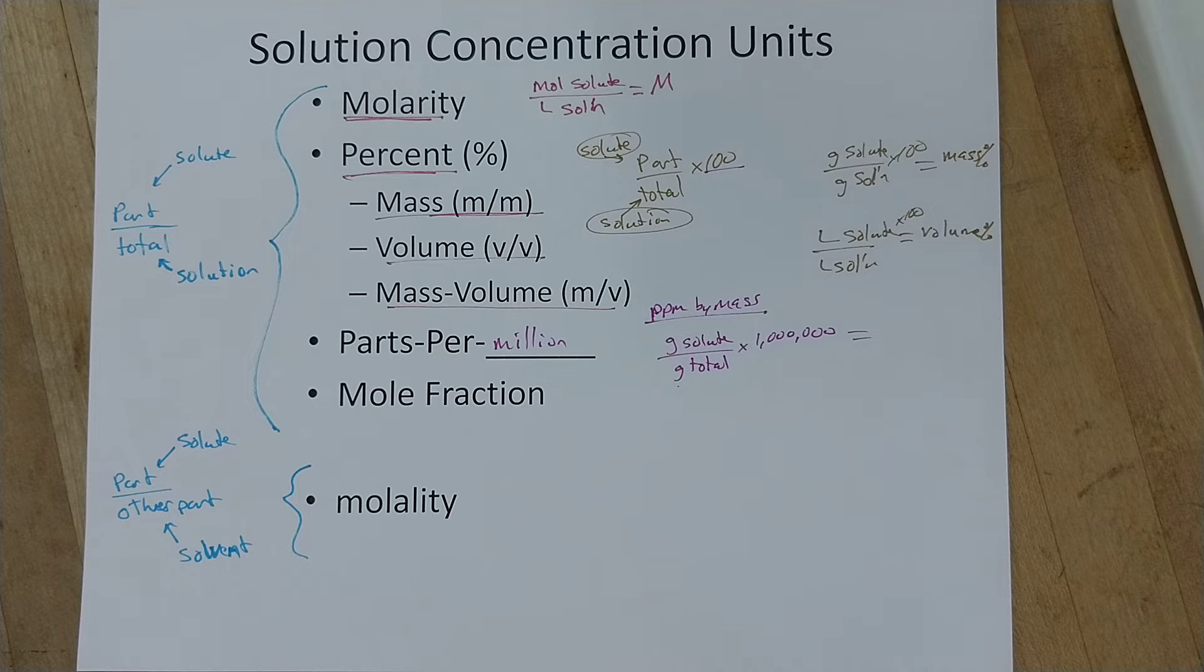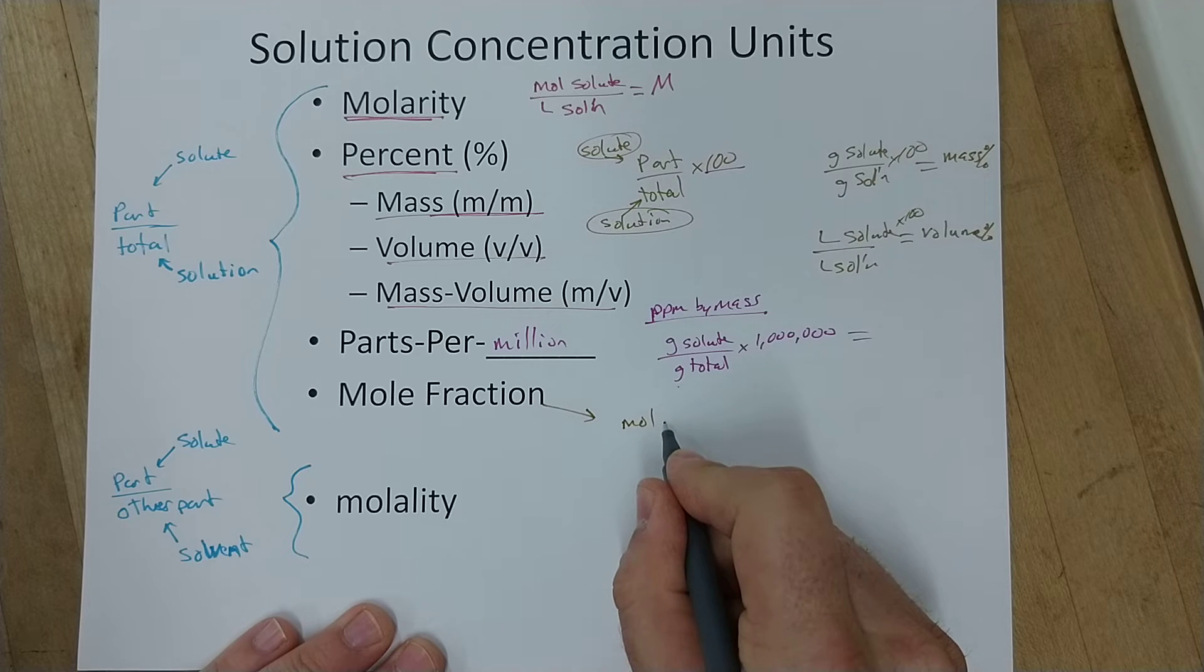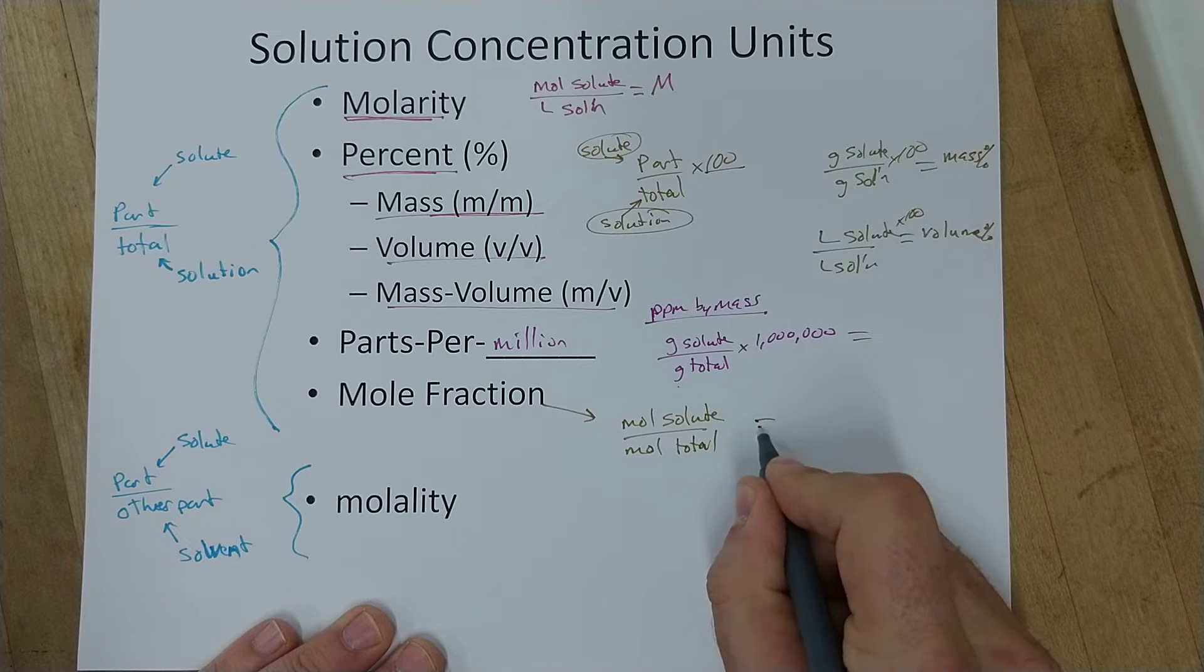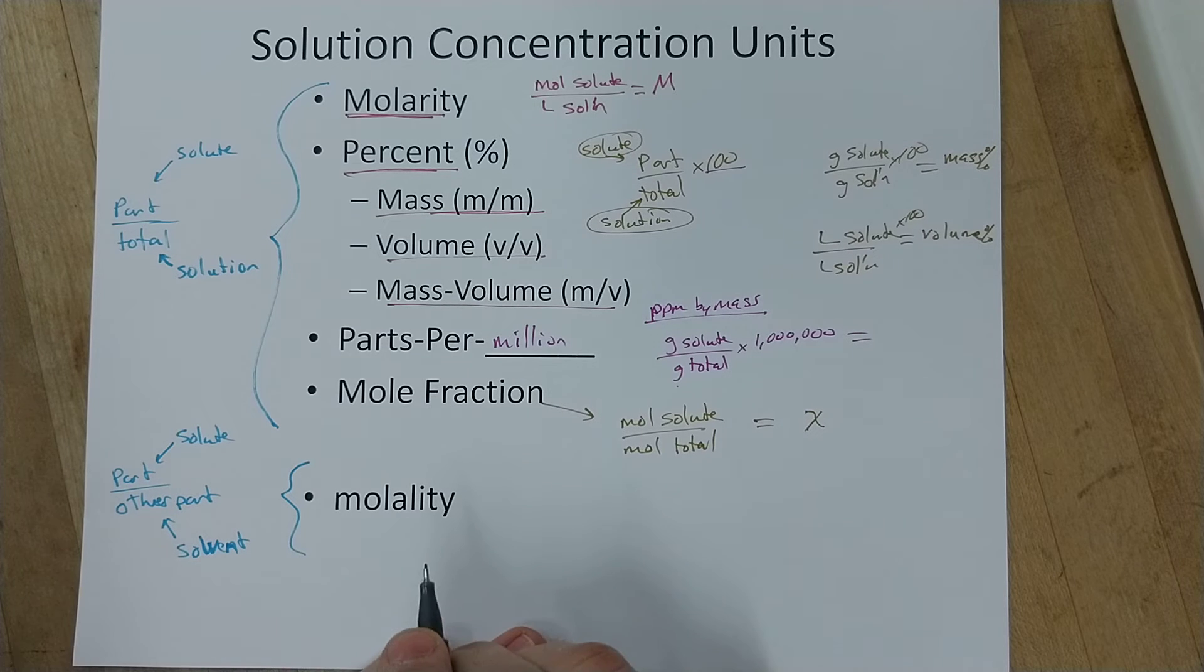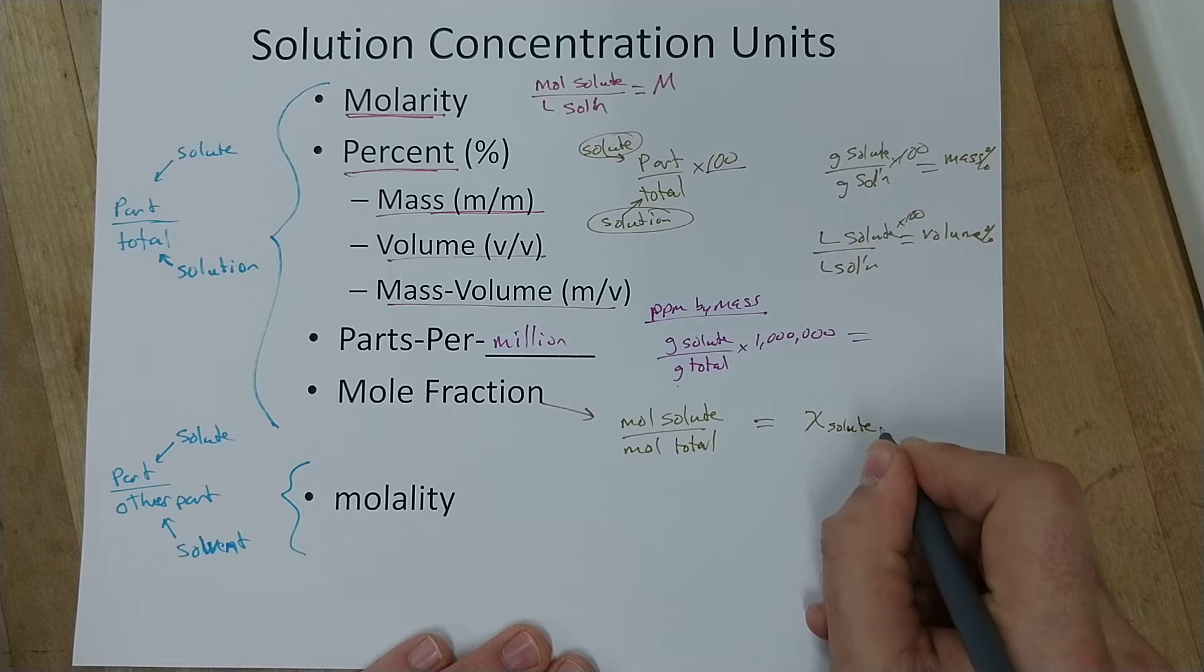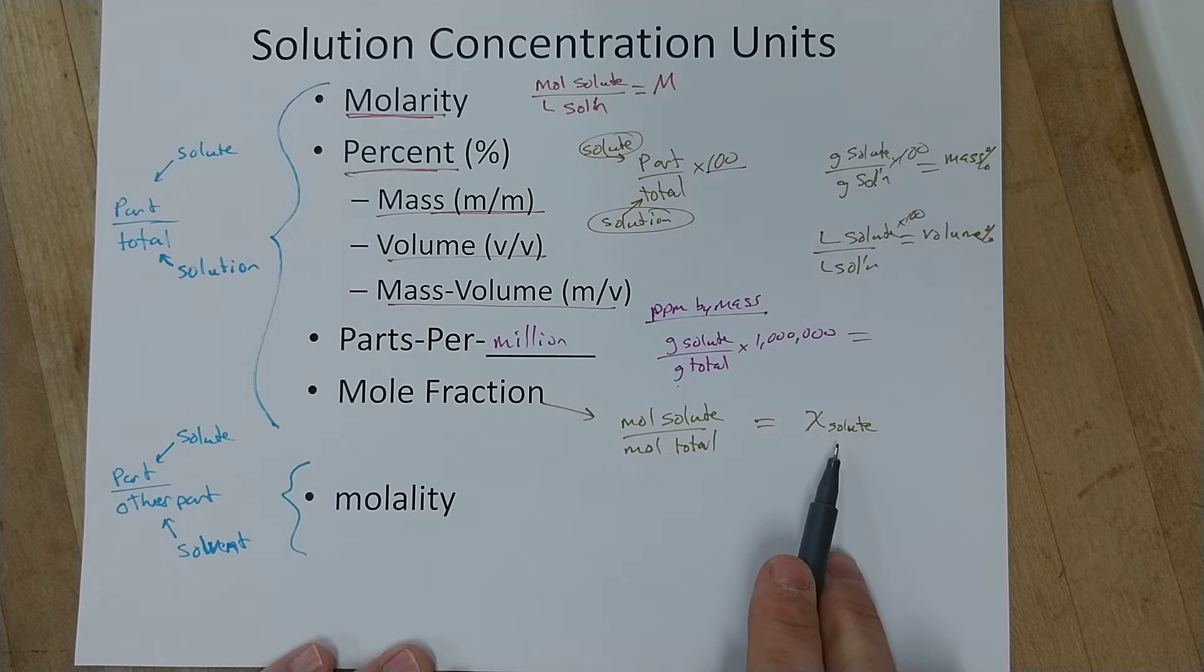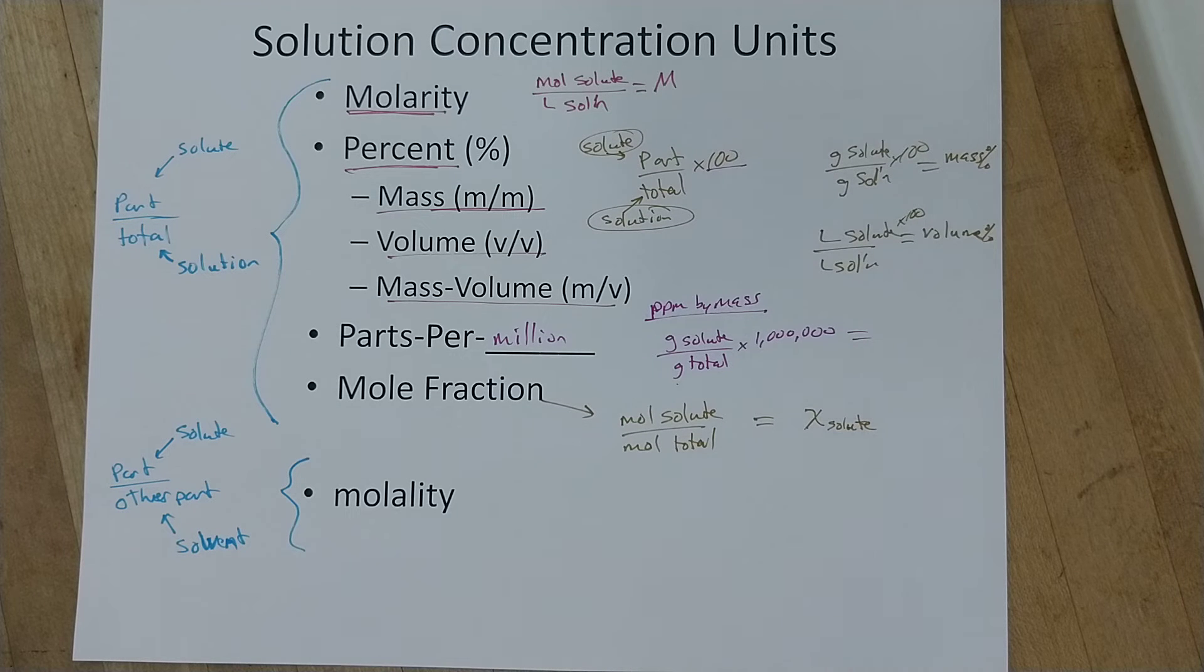The last one, the mole fraction, is just moles of the part which is the solute divided by moles of the total. That's it. Equals mole fraction, we usually use that letter chi to indicate that. And a lot of times we'll also put a subscript here to indicate what that's the mole fraction of. So it's the part but it's always the part over the total. So mole fraction of the solute is the moles of the solute divided by moles of the total.